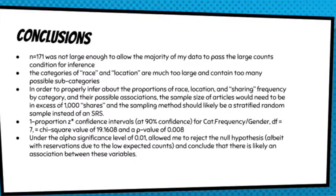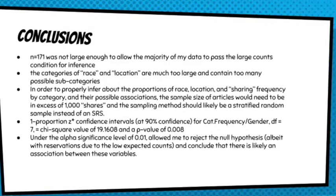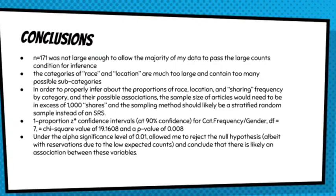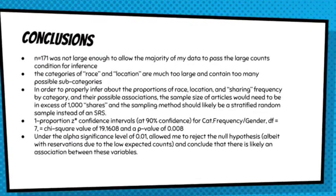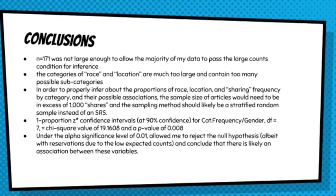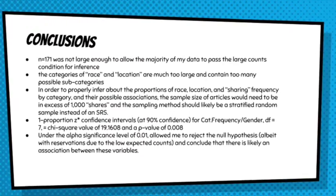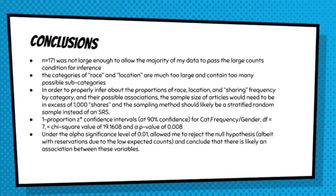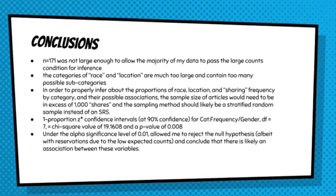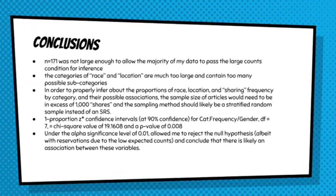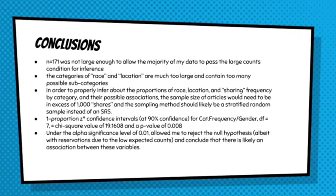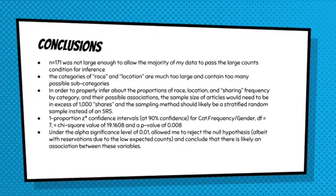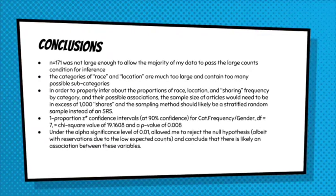Conclusions: 171 posts was not large enough to allow the majority of my data to pass the large counts condition for inference. That was a failure on my part, but I did learn from it. I also learned that the categories of race and location are way too large and contain way too many possible subcategories to be useful for conducting inference procedures. If you want to infer about those things, you need a Mount Everest-size amount of data.